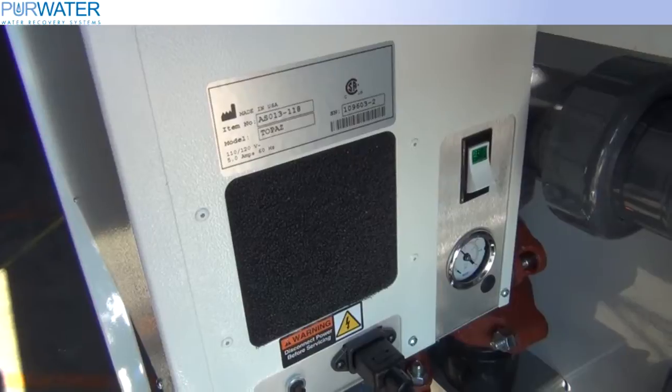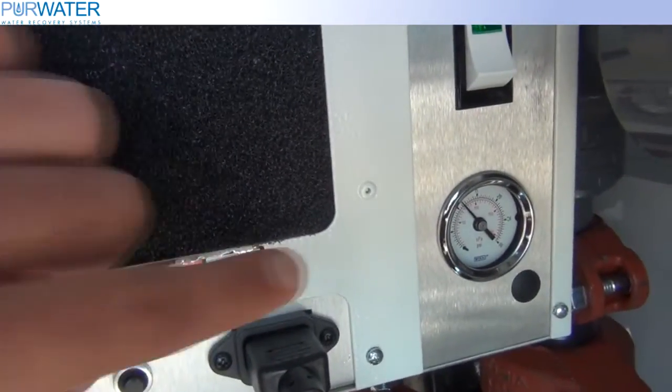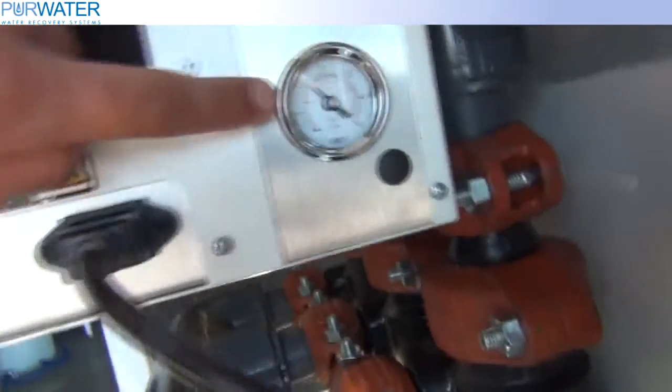There are two pressure gauges and one flow meter that are the core settings for the ozone to properly work. We will review how to set and adjust these items.